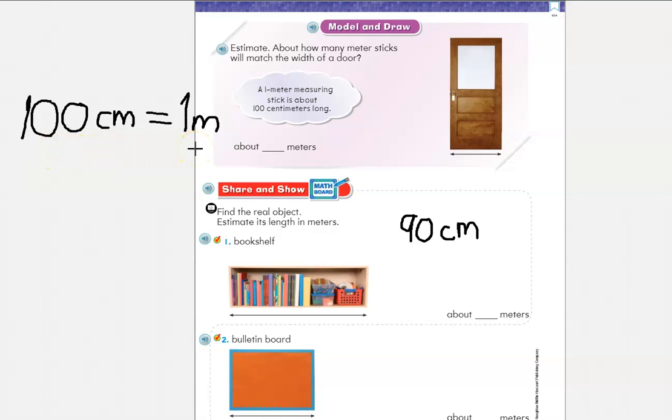That's right, 100 centimeters equals one meter. So if they tell me that this bookshelf is about 90 centimeters, is that a hundred centimeters? No. Is it over a hundred centimeters? No. So it must be what? One meter. It's got to be about one meter.